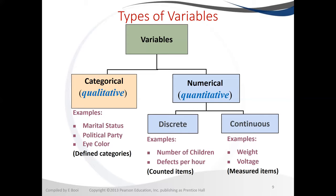There is a catch with some continuous variables: sometimes continuous variables can become discrete variables. For example, if we want to count age in years, then they are no longer continuous but they become discrete.